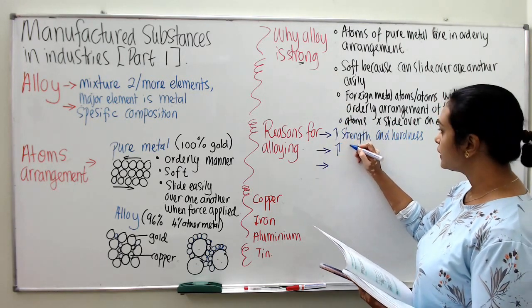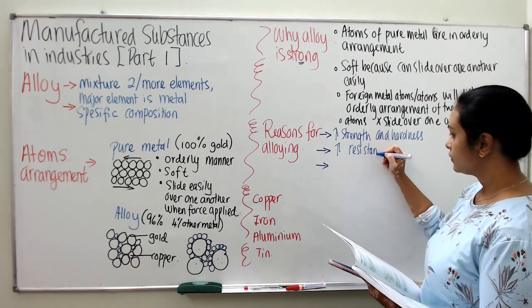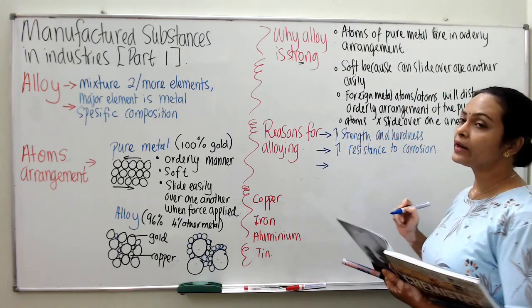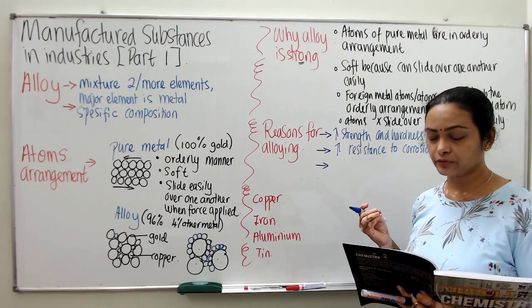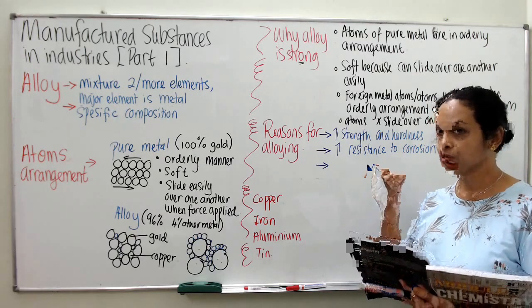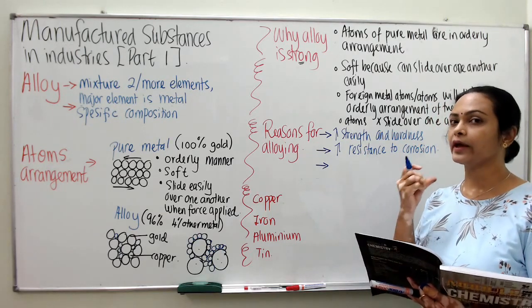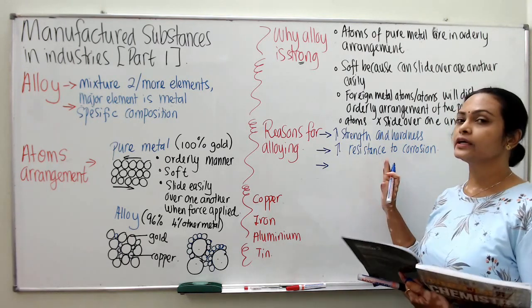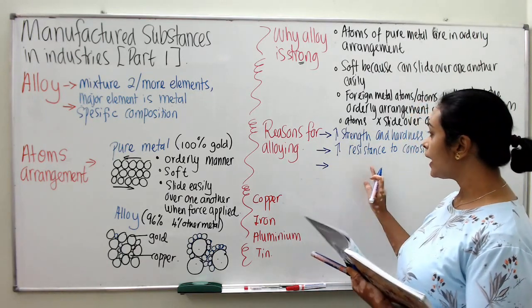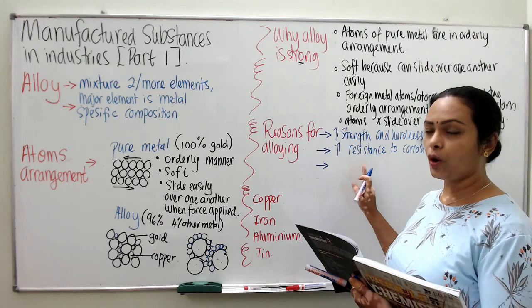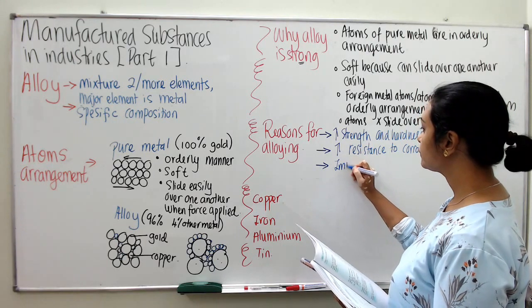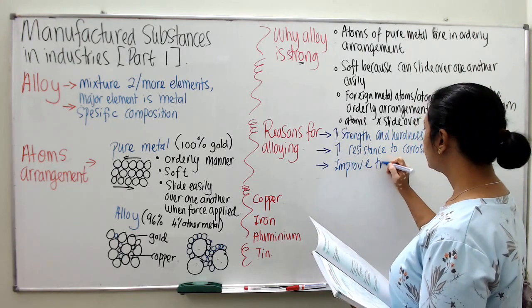Because we add a foreign metal atom, the foreign metal atom somehow helps prevent corrosion — corrosion is something like rusting — from happening. That is the reason why alloying can withstand rusting or corrosion compared to pure metal. Third is to improve the appearance of pure metal.